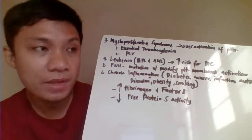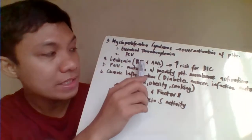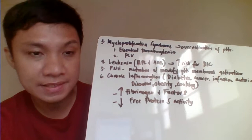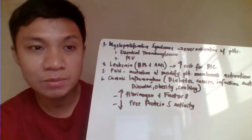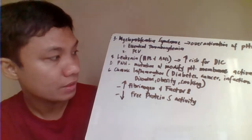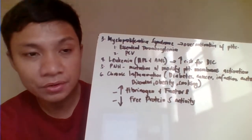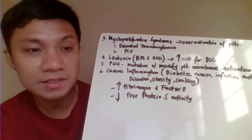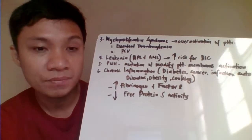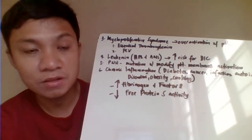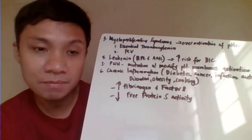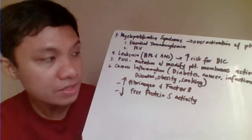Leukemias — acute promyelocytic leukemia and acute myelogenous leukemia — have increased risk for DIC, which always has thrombotic tendency. PNH (paroxysmal nocturnal hemoglobinuria) is characterized by mutation modifying the platelet membrane receptor, resulting in overactivation of platelets and clot formation.